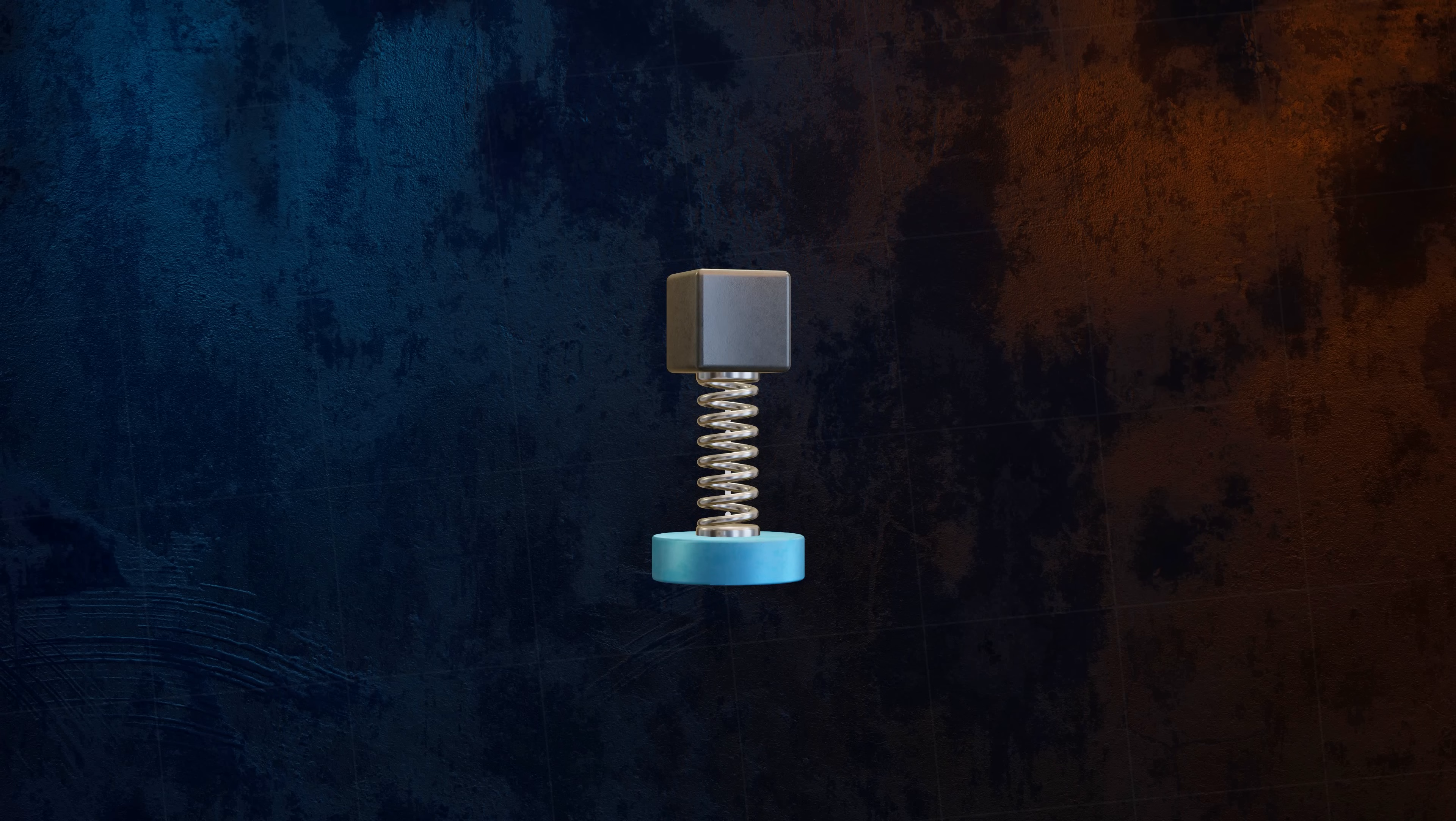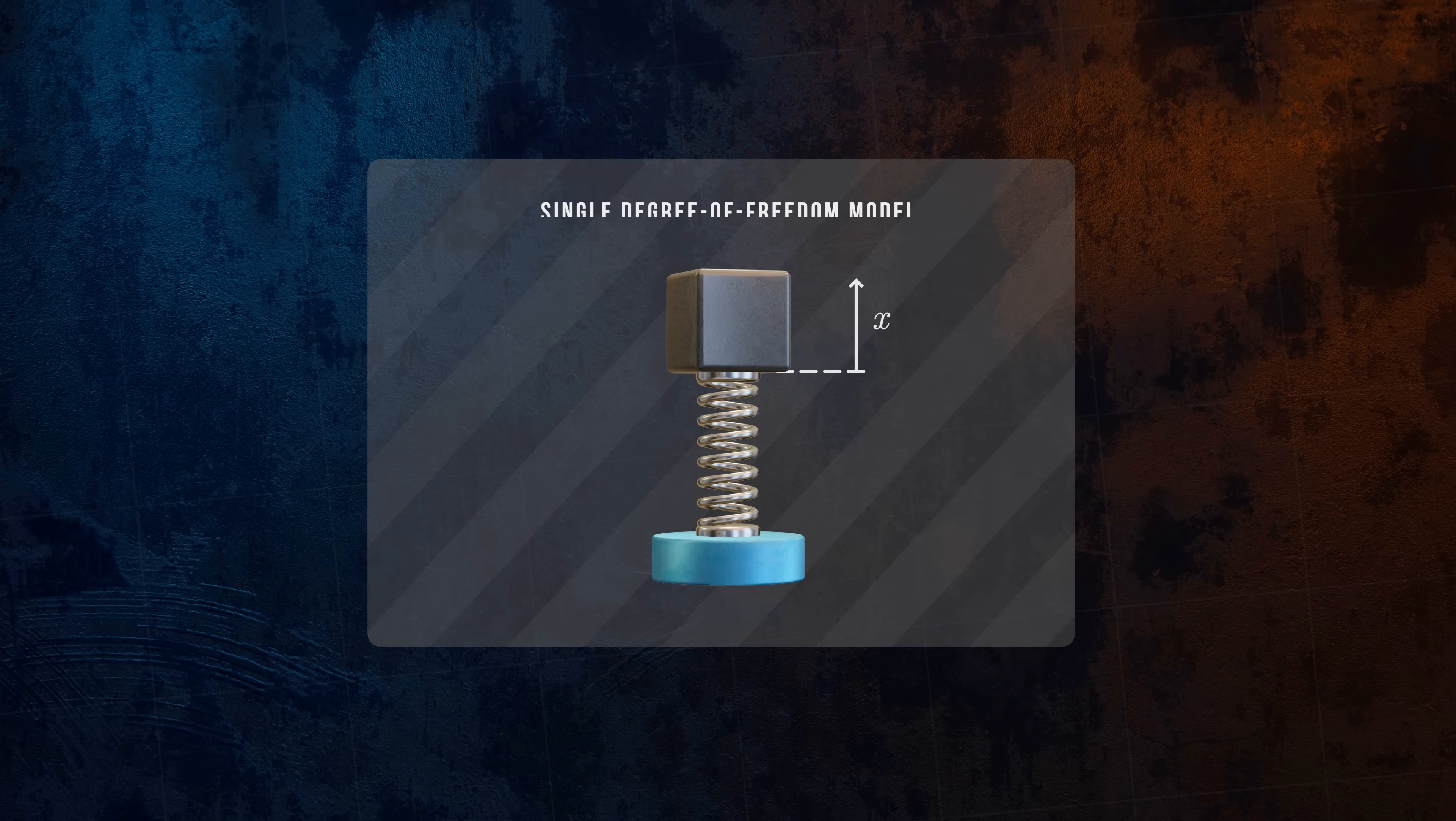We'll assume that the mass can only move up and down. Since the system behavior is defined by a single output, the x-coordinate of the mass, this is what's called a single degree of freedom model.